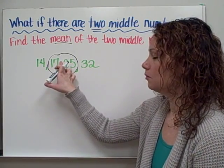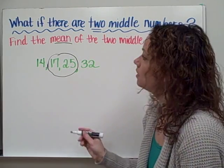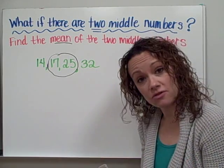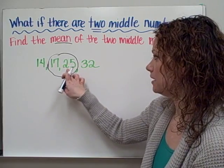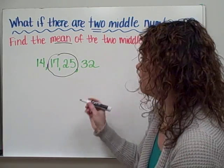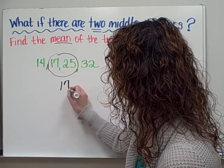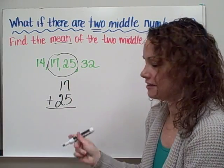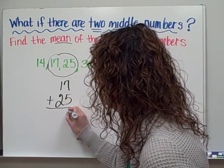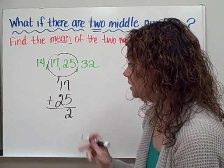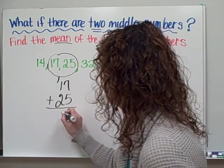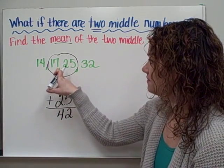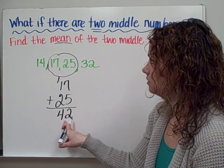We're trying to find out what's in between — what's the average between those two numbers. To find the mean, you have to add up the numbers and then divide by the amount of numbers that you added up. Here we have our two middle numbers of 17 and 25, so let's add them together. We start with our ones place: 7 plus 5 equals 12, put the 2 down, carry the 1. 1 plus 1 equals 2, plus two more equals 4. So the sum of 17 plus 25 equals 42.